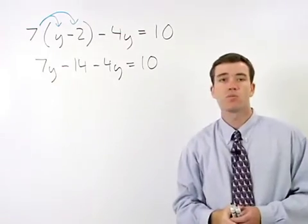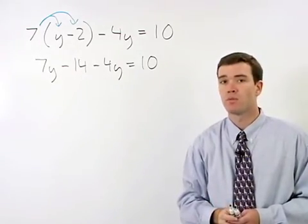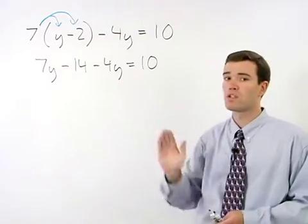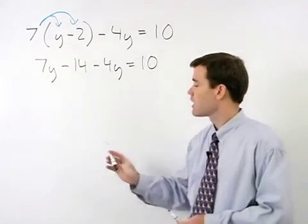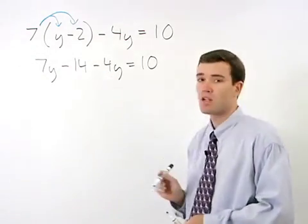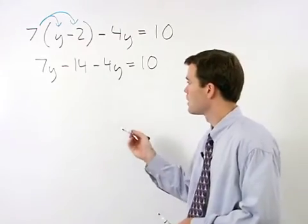The difference between this problem and the previous example is that you can simplify this left side one step further by combining 7y minus 4y to get 3y.